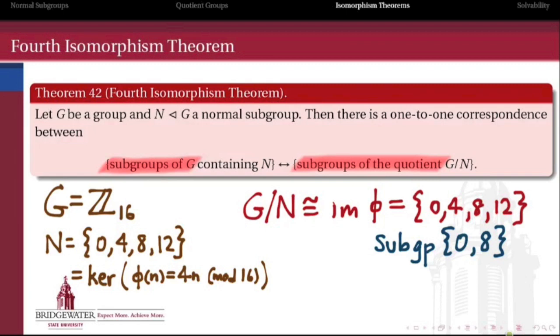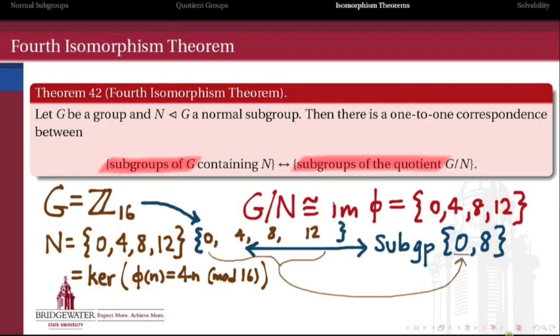Now let's take a subgroup of G mod N. So {0, 8} form a subgroup over here on the right. So how do we associate to that some subgroup of the original group? Well, let's just take the inverse image under this φ of our elements in the subgroup. So the inverse image of 0 is everything which when we multiplied by 4 gave me 0 mod 16, namely {0, 4, 8, 12}. But then the inverse image of 8 is everything that turns into 8 when we multiply by 4, which consists of {2, 6, 10, 14}.